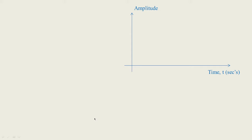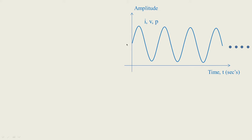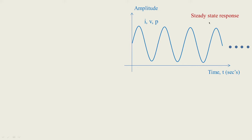Looking at the amplitude-frequency curve, you have a sinusoidal input — whether it is a current, voltage, or power waveform — it repeats along with time. Though there is a change in time, the amplitude of the waveform is not changed. This kind of response can be treated as steady state response.